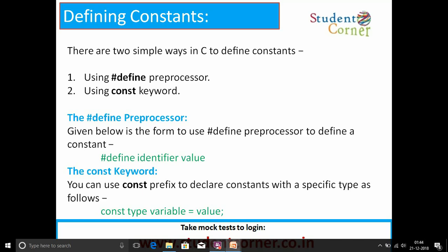The const keyword. You can use const prefix to declare constants with a specific type as follows: const type variable = value.